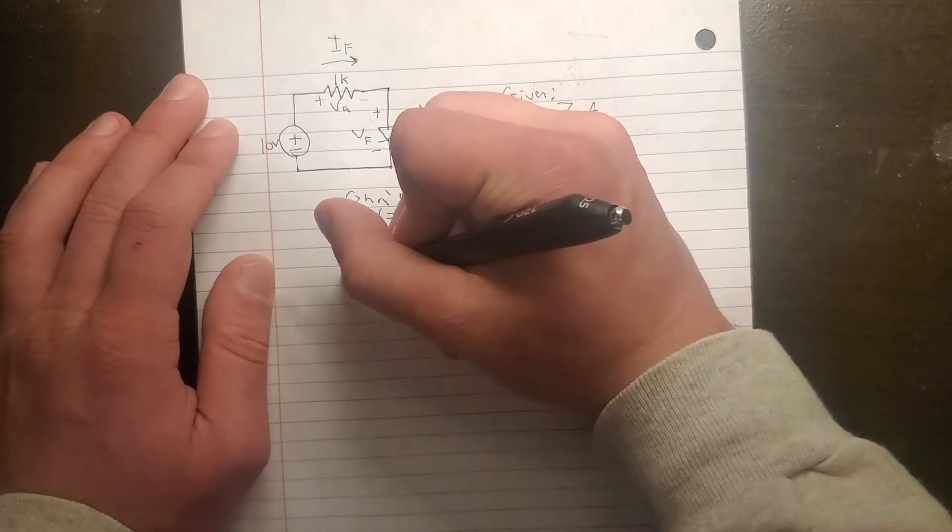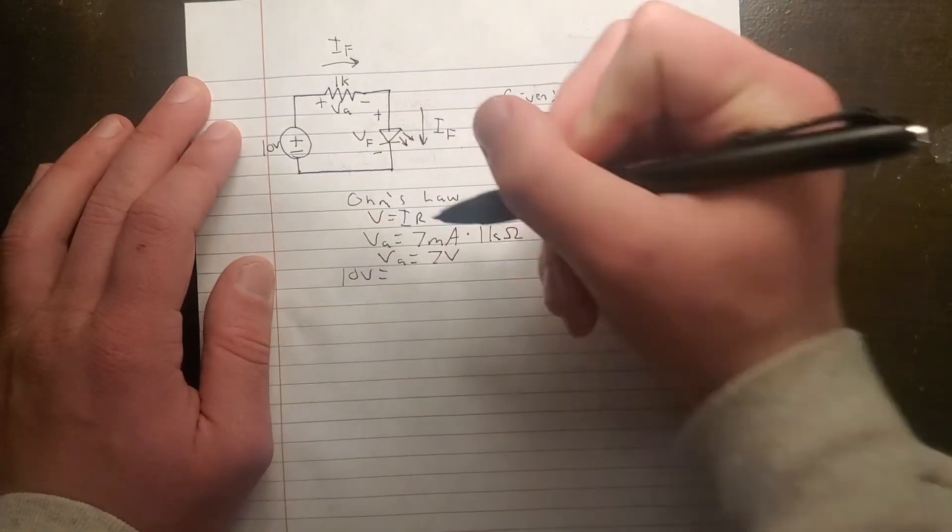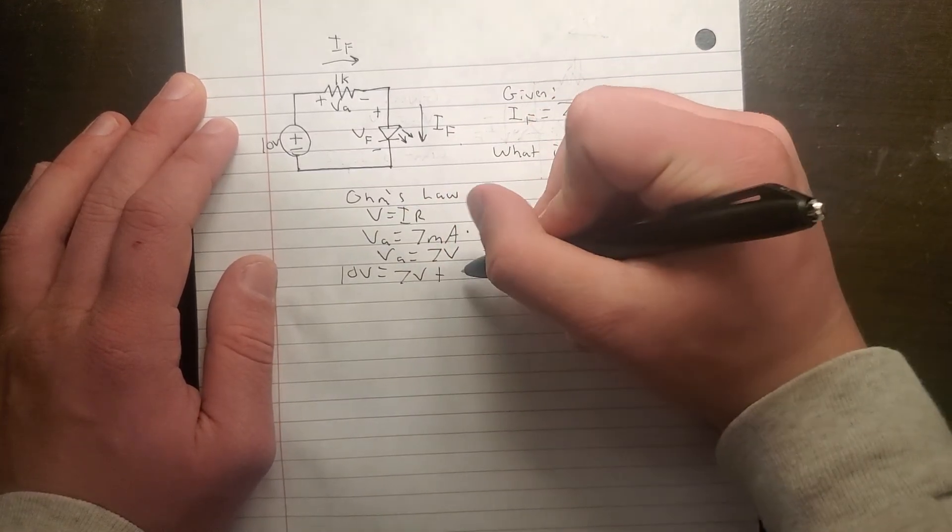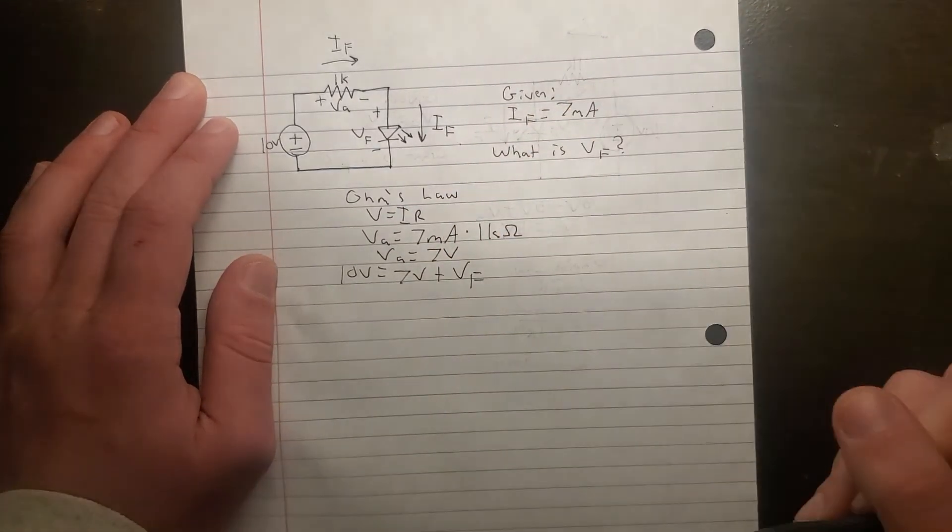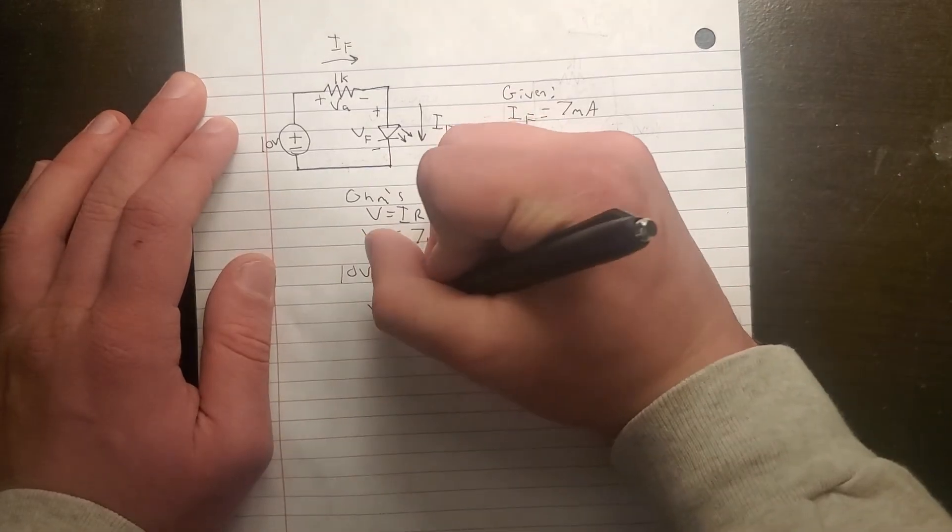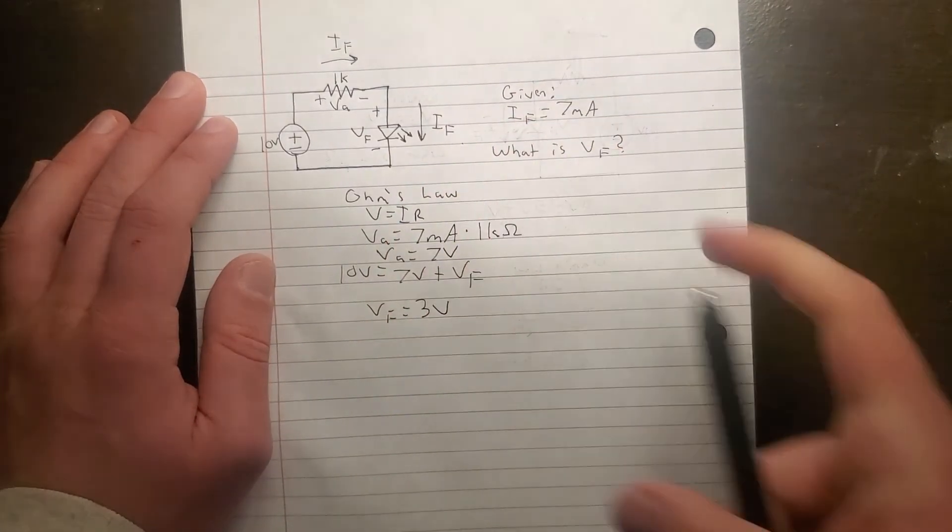But to show that, 10 volts equals 7 volts plus VF. Okay. So we can see right here, VF is 3 volts.